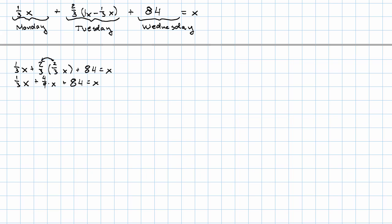Combining these two like terms now, we have one-third plus four-ninths. You can use your calculator for that if you'd like. We get seven-ninths x plus 84 equals x.